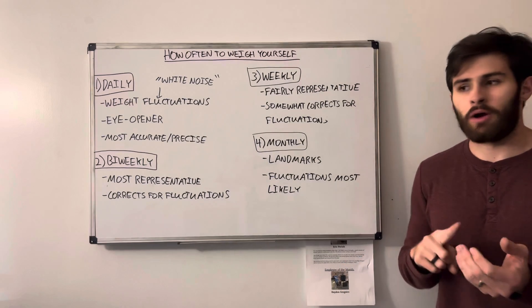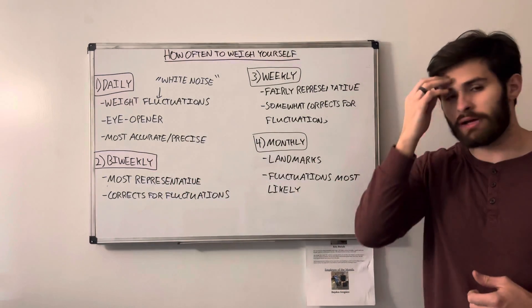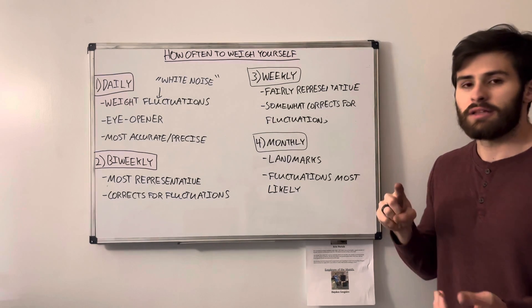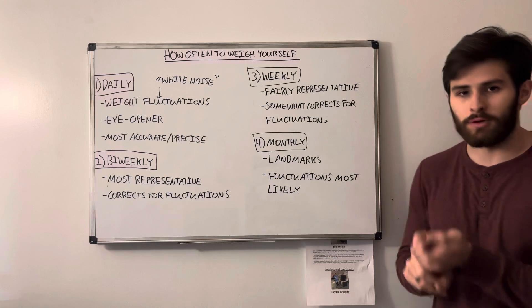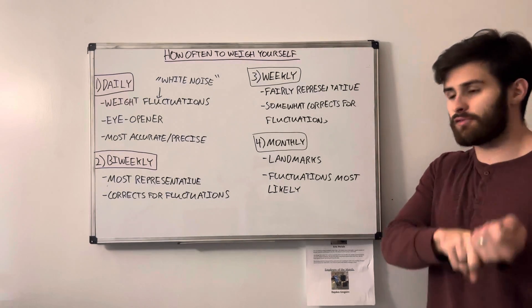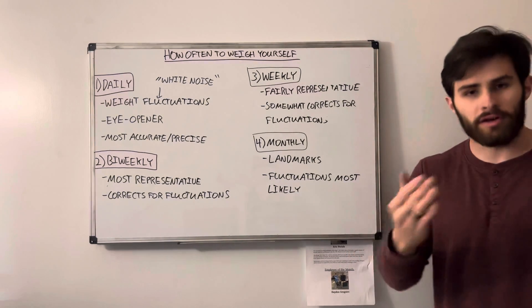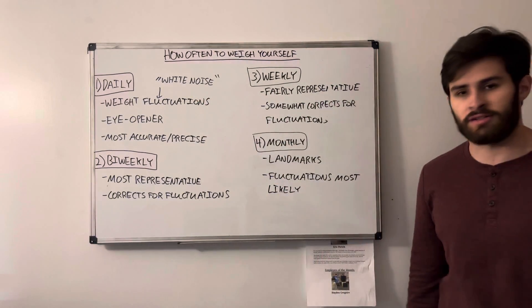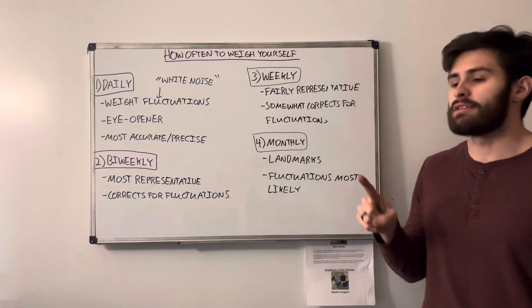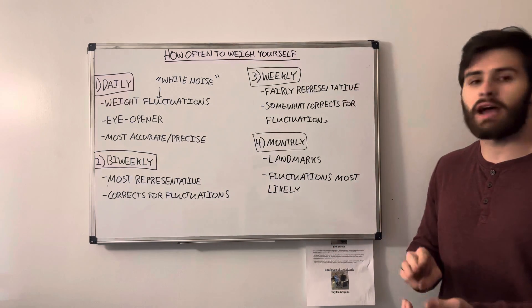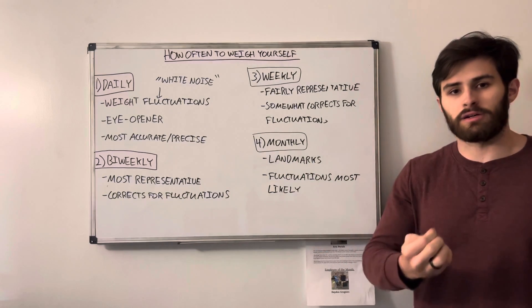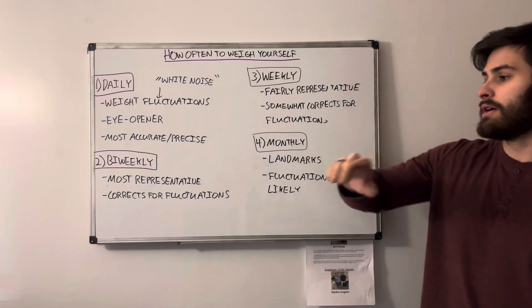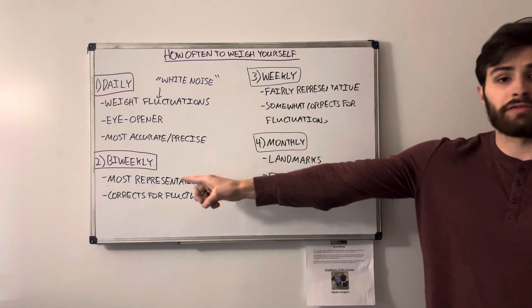Now, one thing just about weigh-ins in general, and this isn't specific to bi-weekly weigh-ins, but any time you step on the scale, you want to try to keep a couple of things constant. The time of day that you weigh yourself, so if you weigh yourself in the morning, after you've maybe had your morning coffee or before, before you've eaten anything, if you've already gone to the bathroom, those kinds of things will correct for inconsistencies that can also cause fluctuations. So try to keep everything the same at the same time. Use the same scale. And that way, the kinds of changes that you might see on the scale are actually representative of the result that you're seeking. So bi-weekly can be the most representative, and it can correct for these fluctuations.